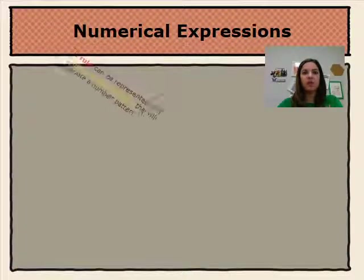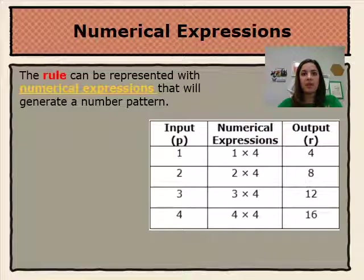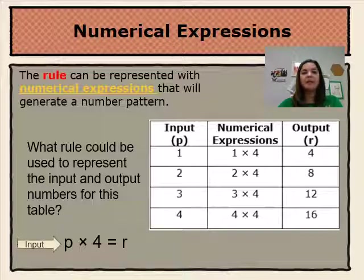Numerical expressions. The rule can be represented with numerical expressions that will generate a number pattern. Here's the table we previously looked at, where the input is represented with the letter P and the output is represented with the letter R. The rule P times 4 equals R represents this table, where P is the input — the position in the sequence — times 4 equals R, the output, the value of that position.